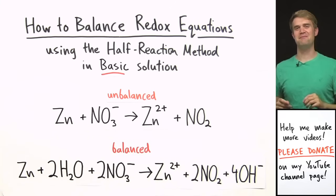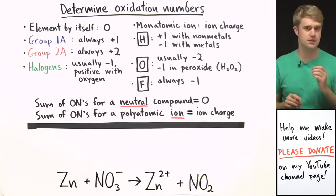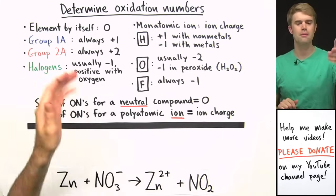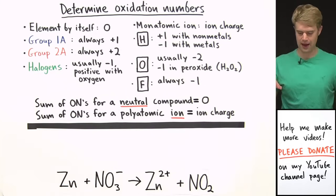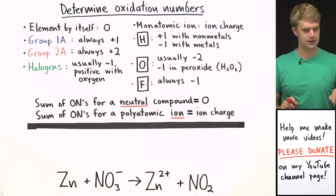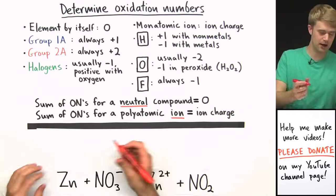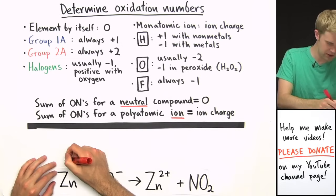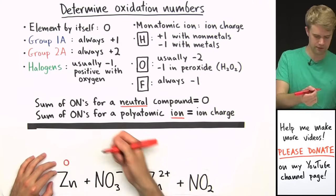Let's get started. This is the equation we're going to be balancing, and we're going to start just like we do with acidic solution — by determining the oxidation numbers of elements in the equation. Zn, zinc, is an element by itself, not combined with any other elements, so it has an oxidation number of zero.